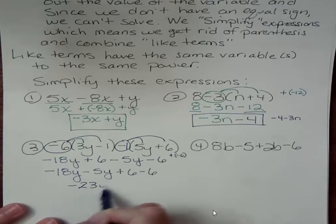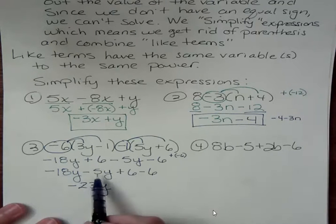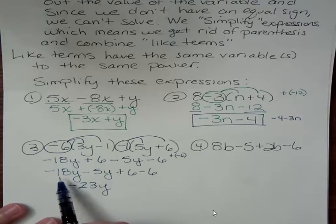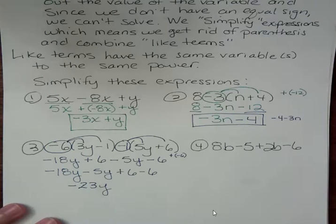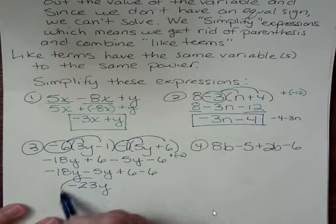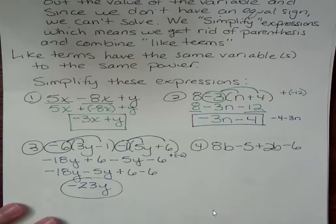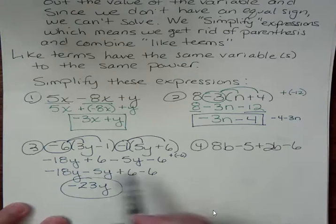Negative 18y minus 5 is negative 23y. We keep the y's and we just combine the coefficients or those numbers that are multiplying the variable. You can do that on your calculator negative 18 and minus 5 or you can do it in your head but it's going to be a total of 23 negatives. And here we have opposites positive 6 and negative 6 and so those just drop out and we're left with negative 23y. Notice in all of these expressions that I'm simplifying I'm not solving. I in the end don't know what the variable equals. I don't have enough information to figure that out. I'm just rewriting this in a simplified way.